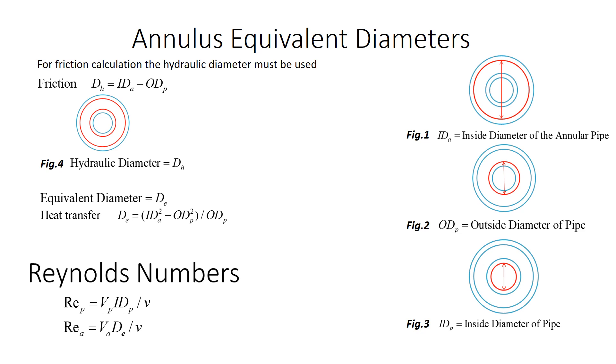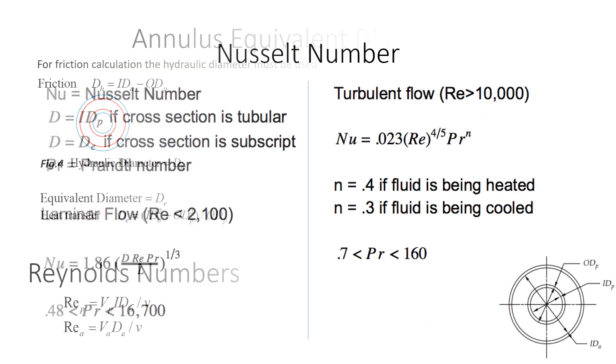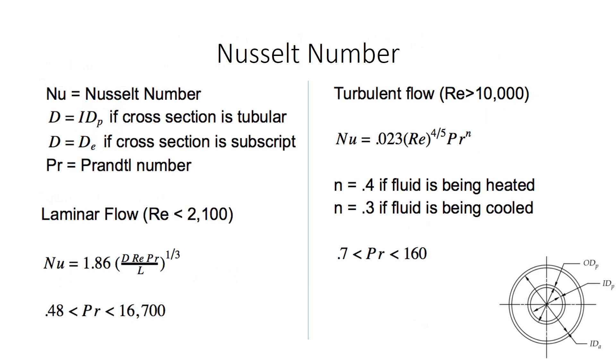After both diameters have been found, the hydraulic diameter must be used to find the Reynolds number for the pressure drop, and the equivalent diameter must be used to find the Reynolds number to find the Nusselt number. Once we calculate Reynolds numbers for the inner pipe's inner diameter and the double pipe effective diameter, we must determine the Nusselt number. If the system is laminar where Reynolds number is less than 2100, we can use the Nusselt number equation shown on the left-hand side of the screen.